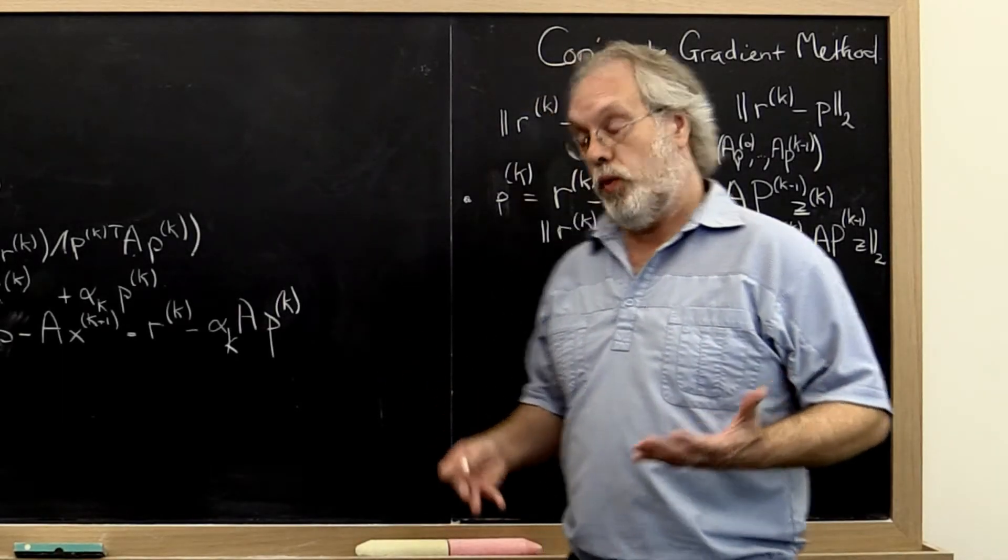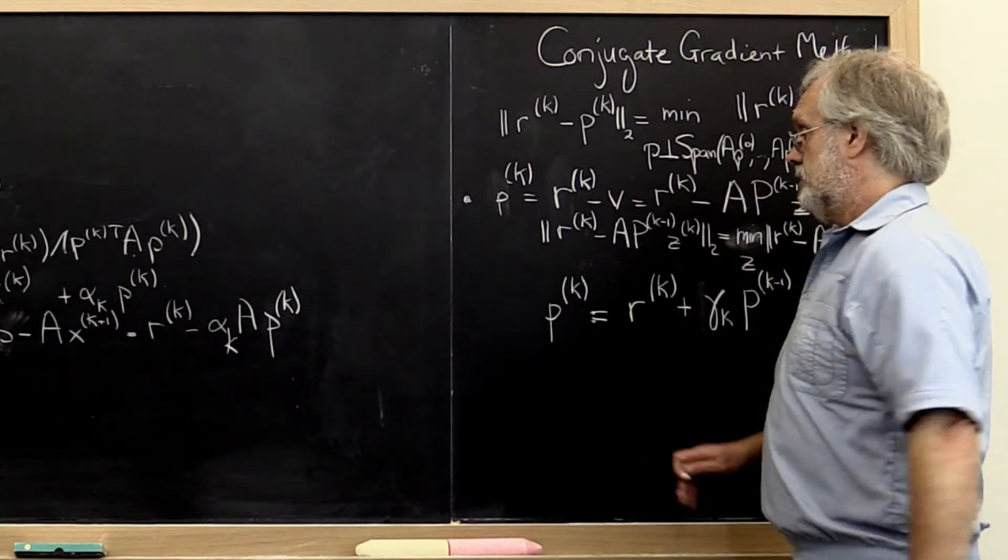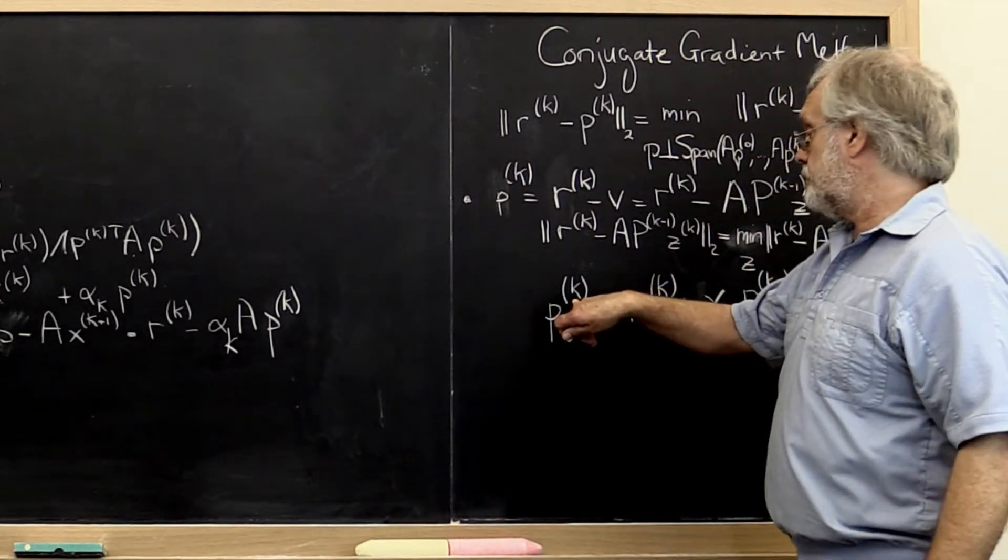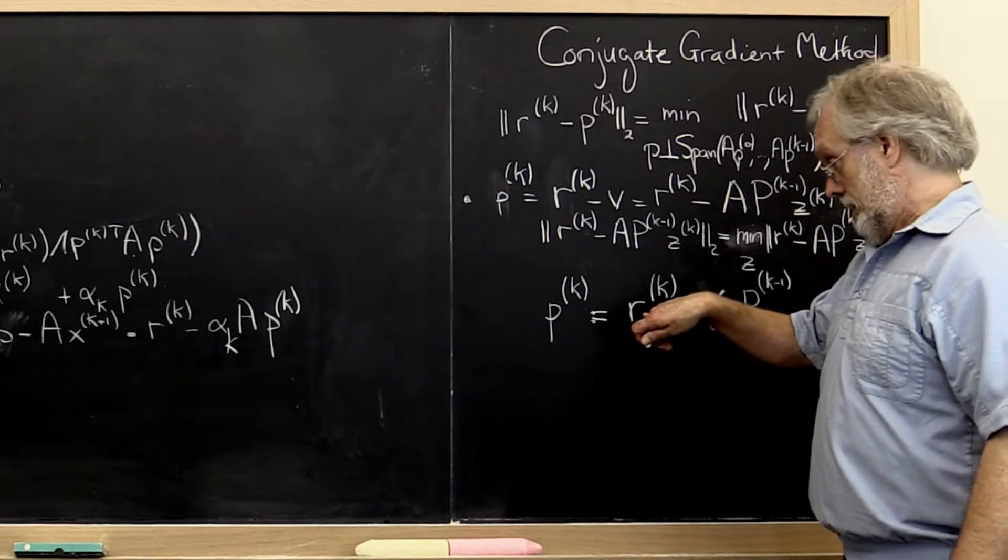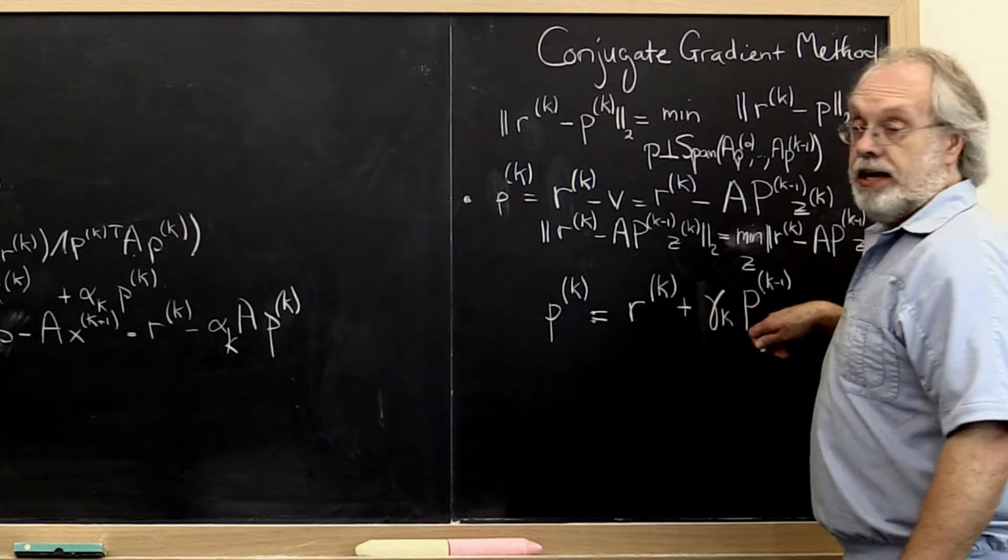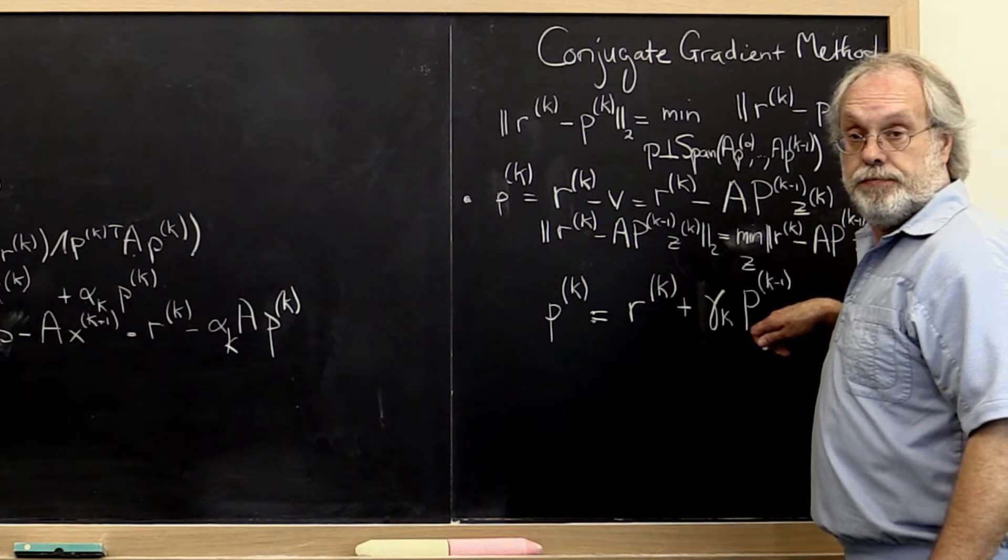So in the last unit we got to this remarkable result. The next search direction is merely a linear combination of the current residual and the last search direction.